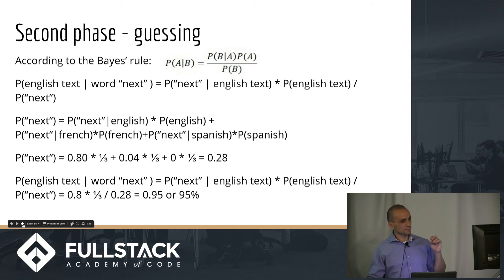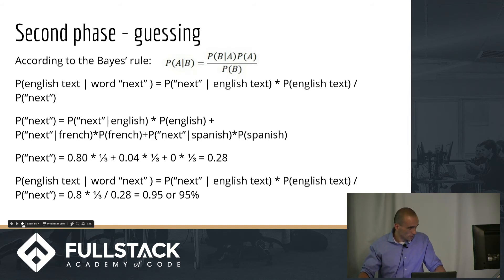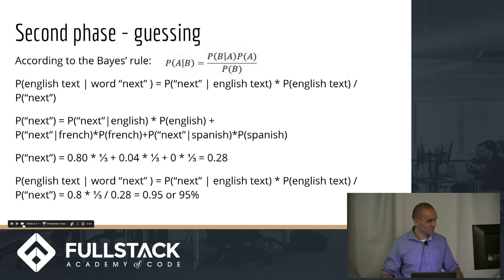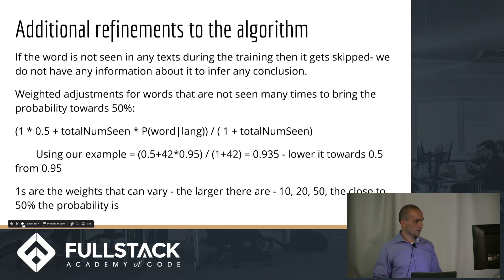The second phase is guessing — using the Bayes formula to calculate the probability. Using the probabilities from training, for the word 'next' at 80%, you plug the numbers in: numerator is 0.8 × 1/3 for English, 0.04 × 1/3 for French, 0 × 1/3 for Spanish. The denominator (P(next)) is about 28%. The result: P(English | 'next') ≈ 95%.